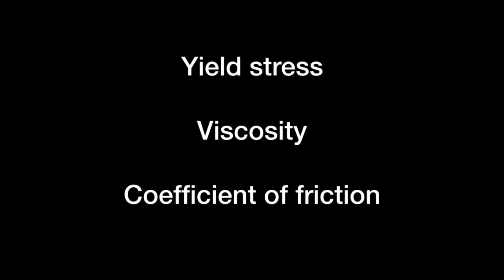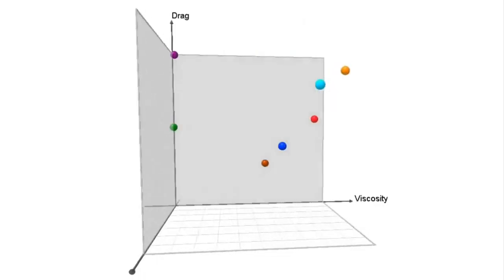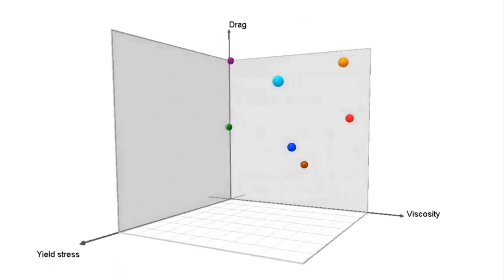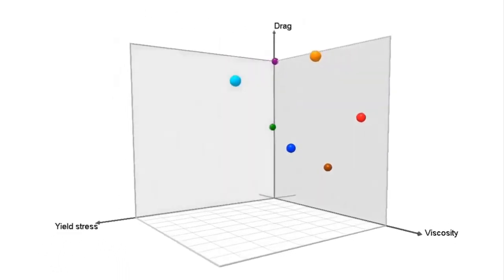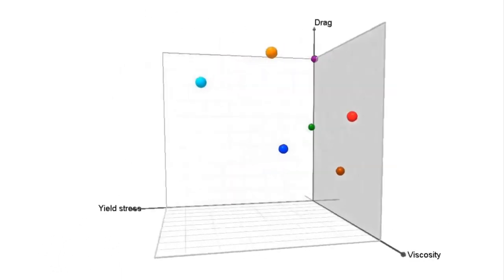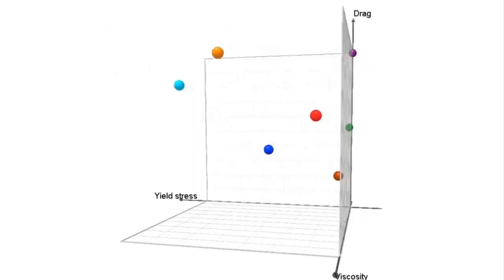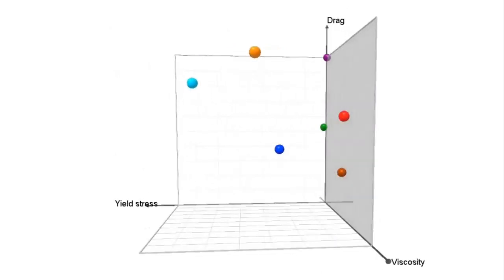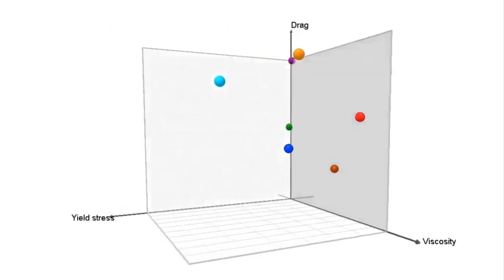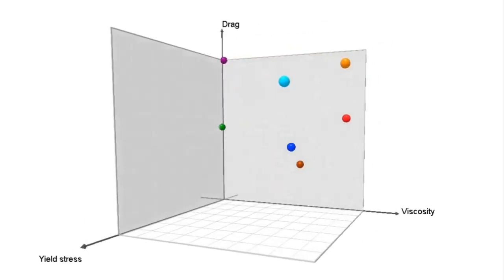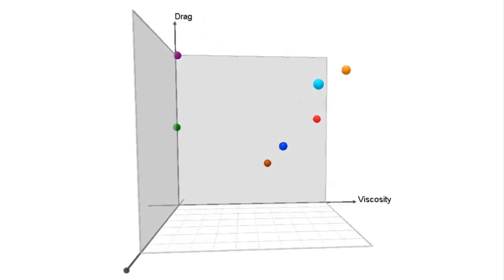So let's look at a typical application of how we would combine three metrics — yield stress, viscosity and coefficient of friction — to generate this three-dimensional scatter plot that we can use to give us an initial establishing shot of a range of products in the marketplace.